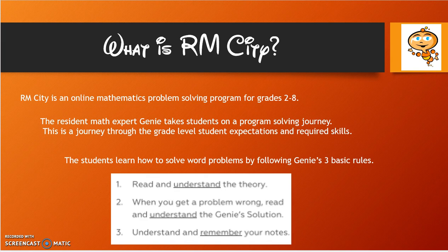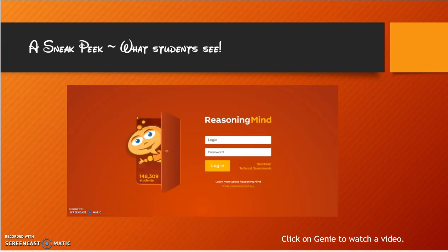Students learn how to solve word problems while following Jeannie's three basic rules: read and understand the problem, read it and understand the solution, and understand and remember your notes. Now let's take a sneak peek at RMCity and see exactly what happens.